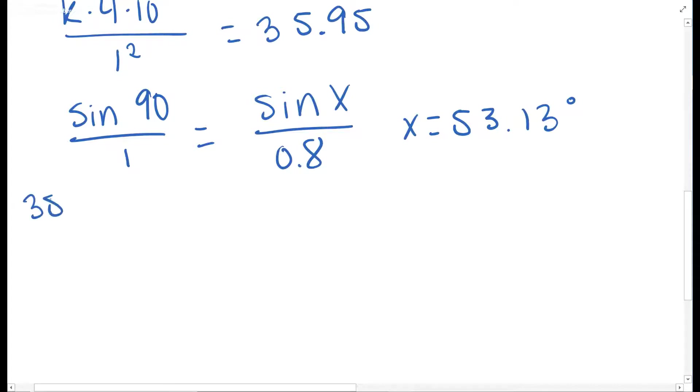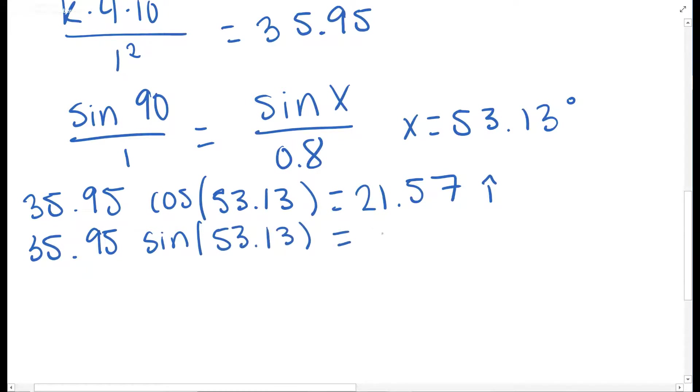That's the angle we're using. So now to find our x and y components of this, 35.95 times cosine of 53.13 is equal to 21.57, and that is in the x direction. To find the y one, we're going to use sine of 53.13, which is equal to 28.8, and that is in the j direction.